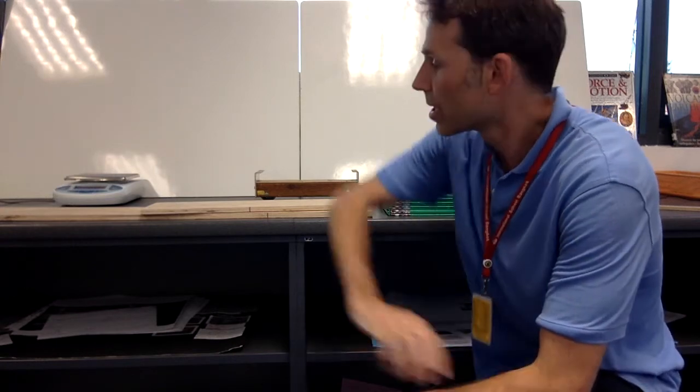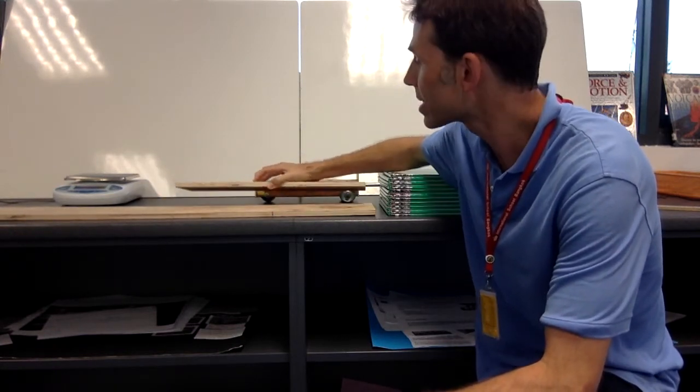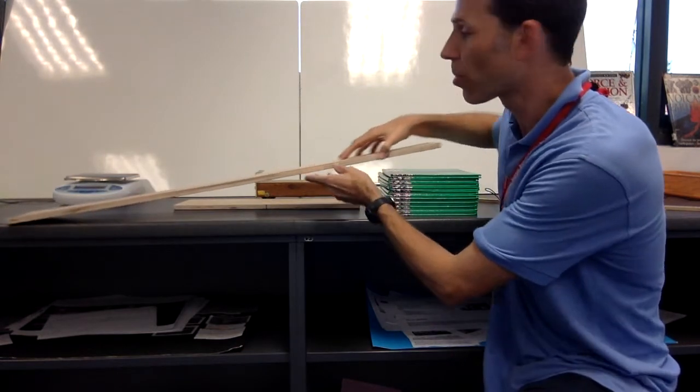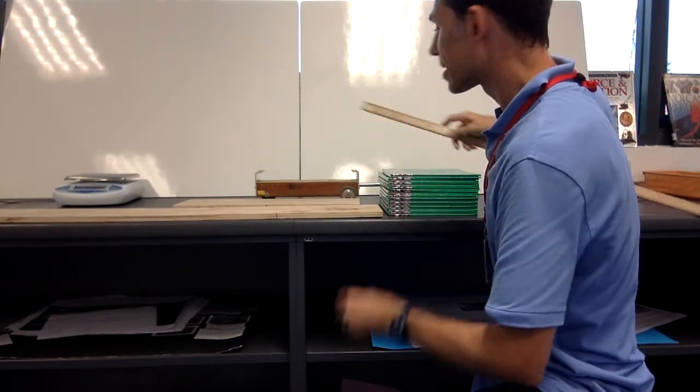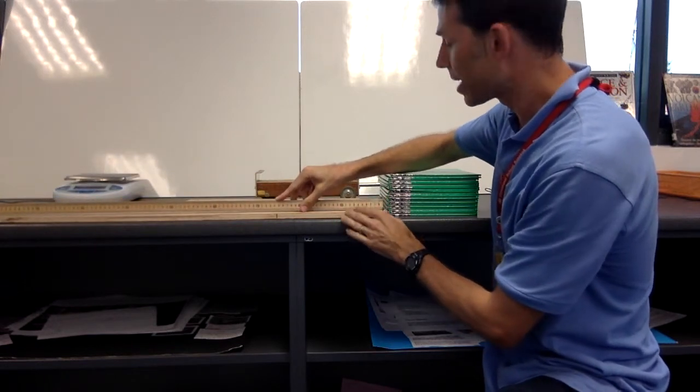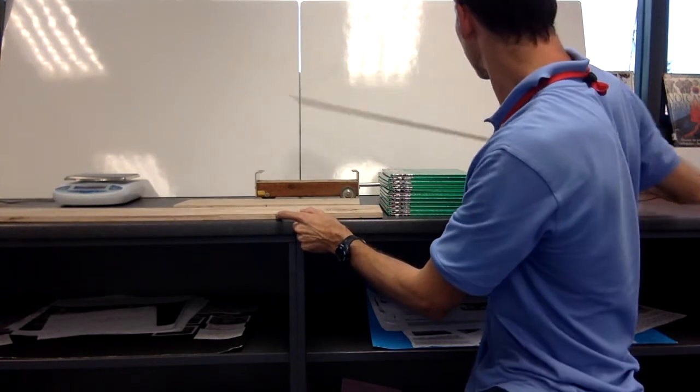For the ramps we're going to be using, we're going to use four lengths. We have two boards but we're going to use each of them twice. The lengths of ramp that we're using are one meter, which is this. We're going to be using three quarters of a meter, and since we're not going to cut the board, you're going to need to take a meter stick, put it on the edge of the board, and measure and make a mark where 75 centimeters is, or three quarters of a meter.